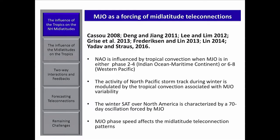There are other studies looking at the influence of the MJO onto the North Atlantic region. It was found that the NAO is influenced by tropical convection when the MJO is in phases 2-4, meaning convection is located over the Indian Ocean, or in phases 6-8. It was also found that the North Pacific storm track activity during winter is modulated by tropical convection associated with the MJO, and that winter surface air temperature over North America is characterized by a 70-day oscillation forced by the MJO. The MJO phase speed also affects mid-latitude teleconnection patterns.